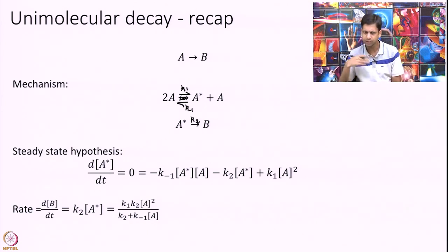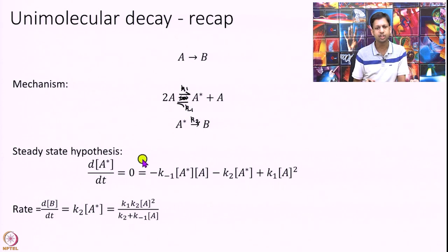I can build kinetics on top of it. I can find what is dA/dt, dA*/dt, and dB/dt. Then we make the steady state hypothesis which assumes dA*/dt is 0. dA*/dt you can easily show is given by this expression. You get 3 terms because A* appears 3 times: one here, one in the forward direction, and one in the backward direction. The steady state hypothesis is that the intermediate population does not change with time. So we set that to 0, and finally the rate, which is nothing but dB/dt, is equal to K2 times A*. We use this equation to calculate A* and eliminate A* out and finally get rate as this.